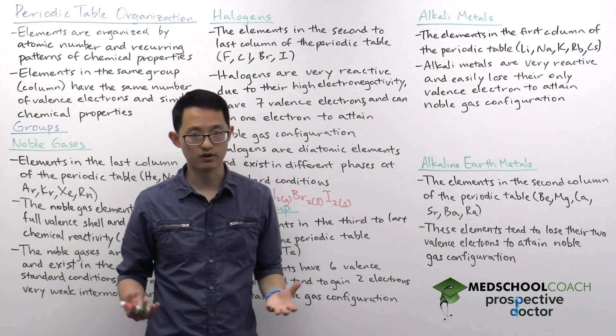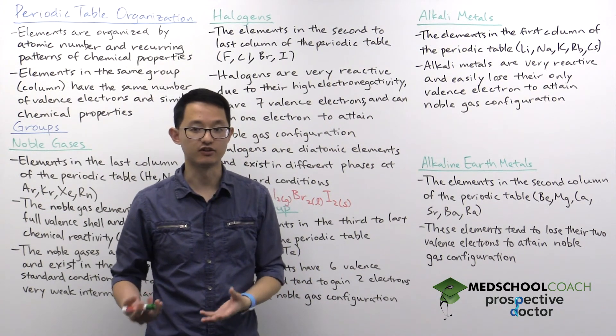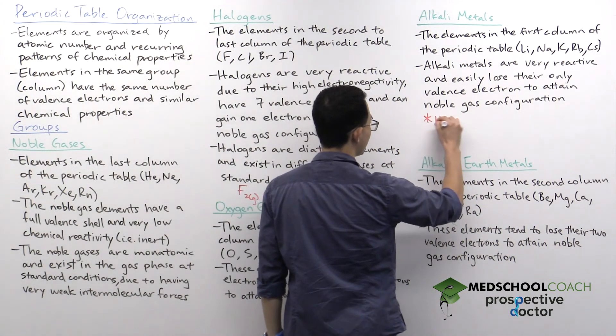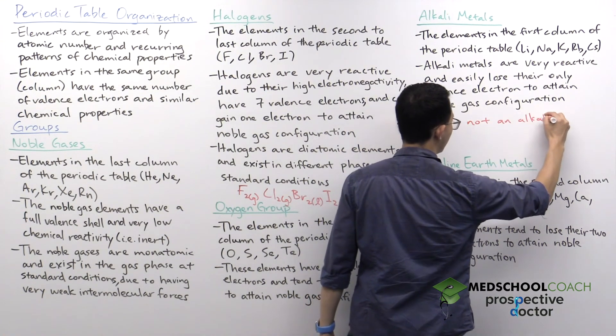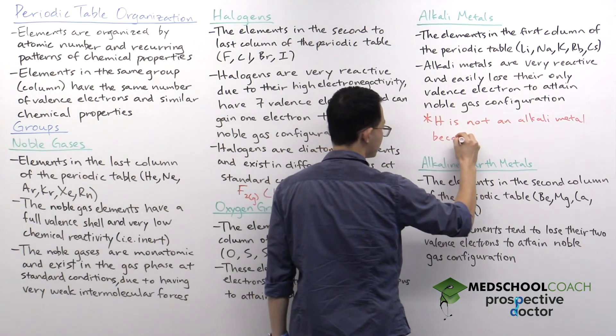But if you look at all the other properties of hydrogen, hydrogen behaves like a nonmetal. So that's good to keep in mind. Hydrogen is not an alkali metal because it has properties of nonmetals.